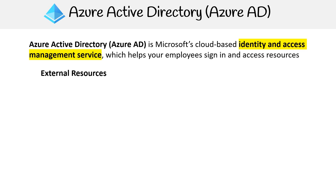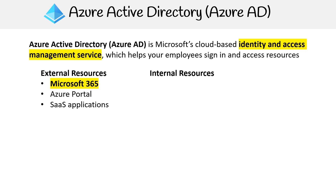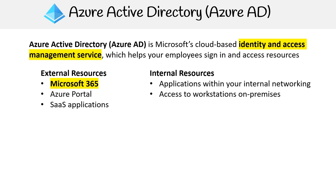On the external side, we're looking at Microsoft 365, the Azure portal, and SaaS applications. For internal resources, we have applications that reside within your internal network and access to workstations that may reside on premises.